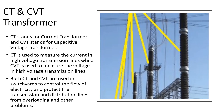CT stands for current transformer and CVT stands for capacitive voltage transformer. CT is used to measure the current in high-voltage transmission lines, while CVT is used to measure the voltage in high-voltage transmission lines. Both CT and CVT are used in switchyards to control the flow of electricity and protect the transmission and distribution lines from overloading and other problems.